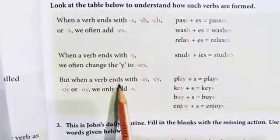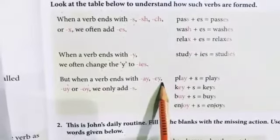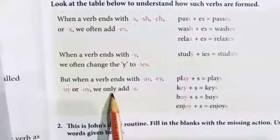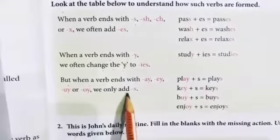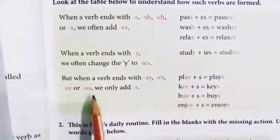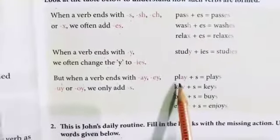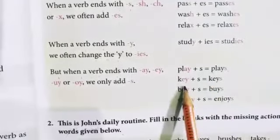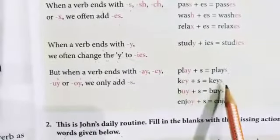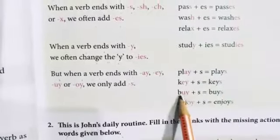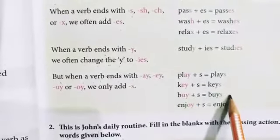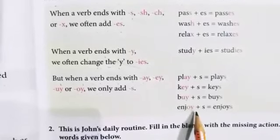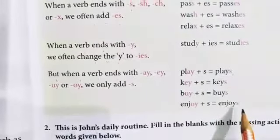But when a verb ends with A-Y, E-Y, U-Y, or O-Y, we only add S — we don't remove Y. Play — add only S. Key — K-E-Y — add only S. Buy — B-U-Y — add only S. Enjoy — ends with O-Y — so don't remove Y, add only S.